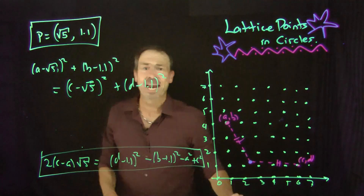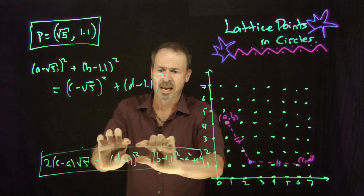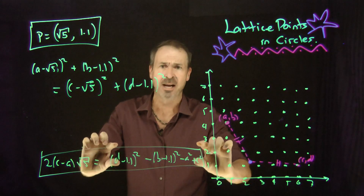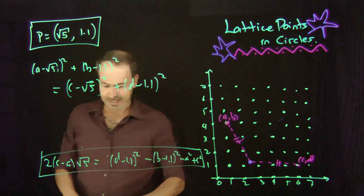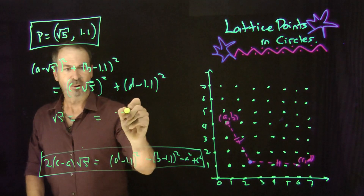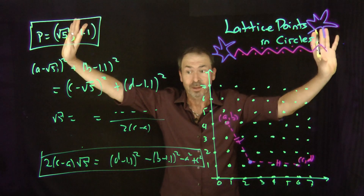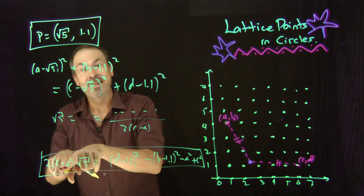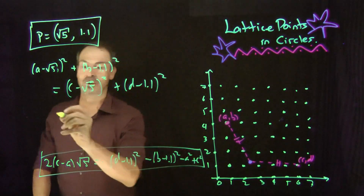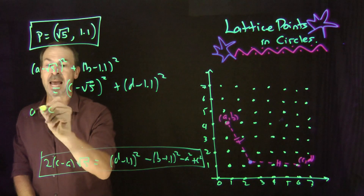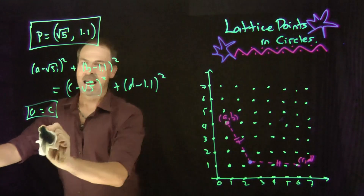This is potentially troublesome, because on the right-hand side everything is a rational number — integers, 1.1 squared, all nice rational numbers. Over here I've got 2 times an integer times √5 equals a rational number. So I could argue that √5 equals all that rational stuff divided by 2(c − a), which would tell me that √5 is actually a rational number. Not true. So there's one way out of this pickle: it may be that (c − a) is zero, in which case I can't divide. For this equation to hold true, knowing that √5 is irrational, I am forced to conclude that c − a equals zero — that is, a and c must be the same number.